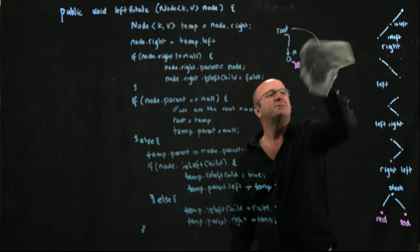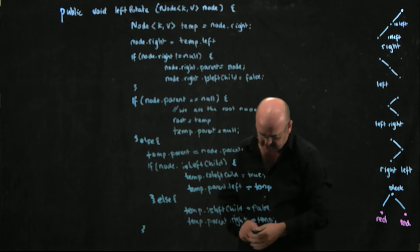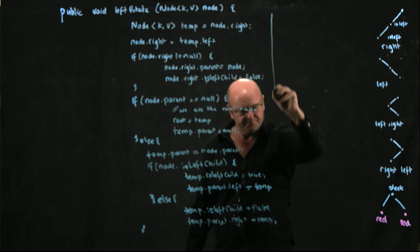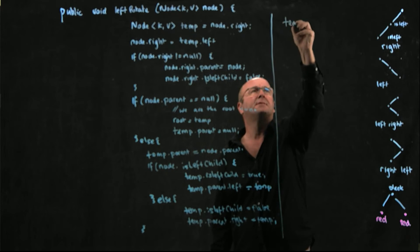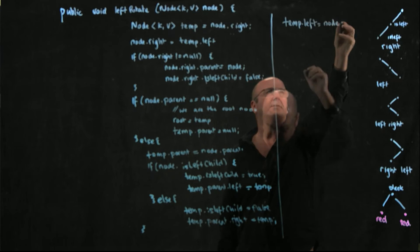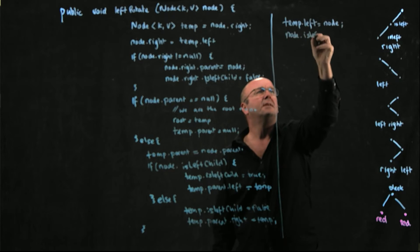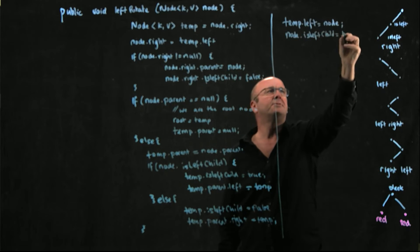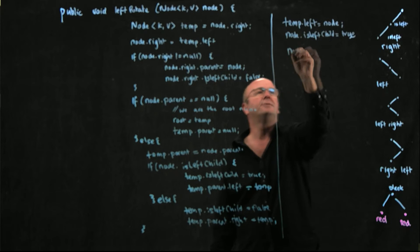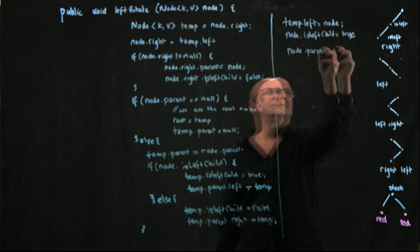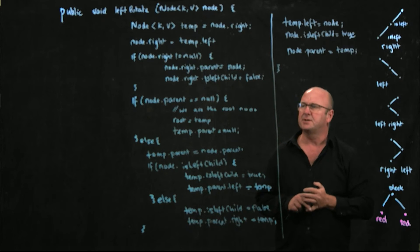So we've handled the parent pointer situations. The last three lines we need in our rotation code: we set temp dot left equal to node, we set node dot isLeftChild equal to true because we just made it the left child, and we set node dot parent equal to temp. And that's our left rotation code.